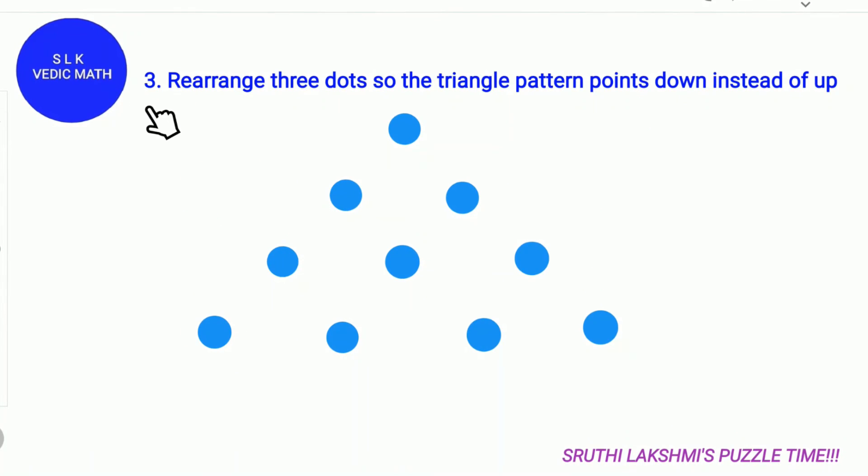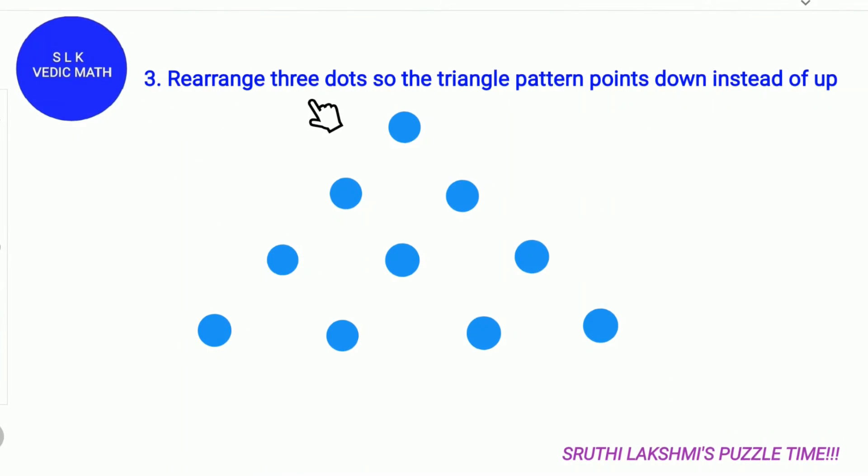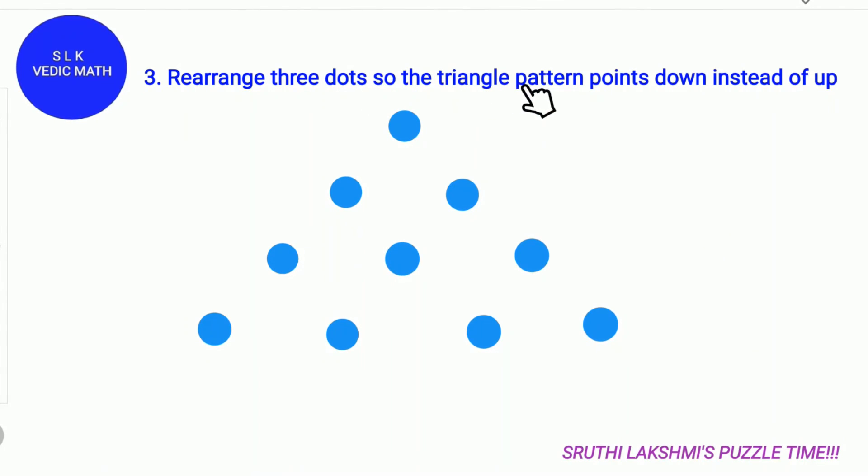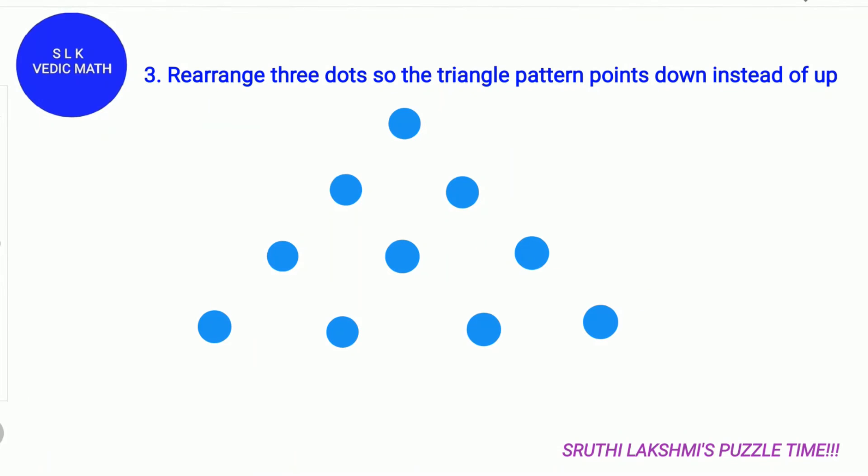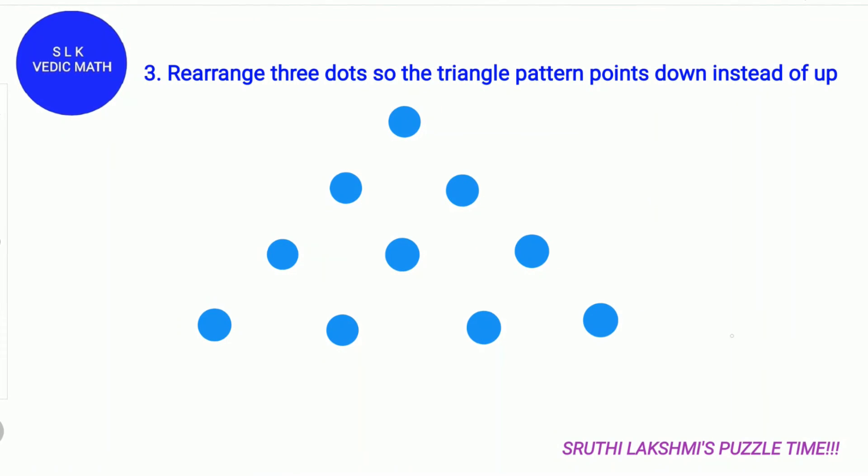Let's see puzzle number 3. Rearrange the 3 dots so the triangle pattern points down instead of up. You will have 20 seconds to solve this problem. Starting now!